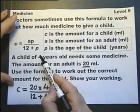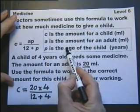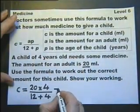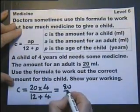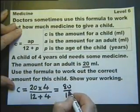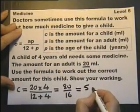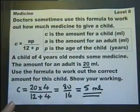And then A is the amount for the adult and an adult takes 20 milliliters. So by substituting the value of 4 for the age of the child and 20 for the amount for the adult, we can work out the amount for the child. So 20 times 4 is 80, 12 plus 4 is 16. Top divided by bottom, 80 divided by 16 goes 5. This tells us that the child, using this formula, needs 5 milliliters of the medicine.